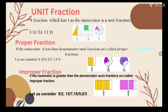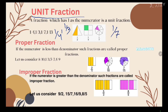The first type is unit fraction. What is a unit fraction? A fraction which has one as the numerator is a unit fraction. For example: one by four, one by three, one upon seven, one upon thirteen. This is the numerator and this is the denominator. A unit fraction has only one as the numerator.